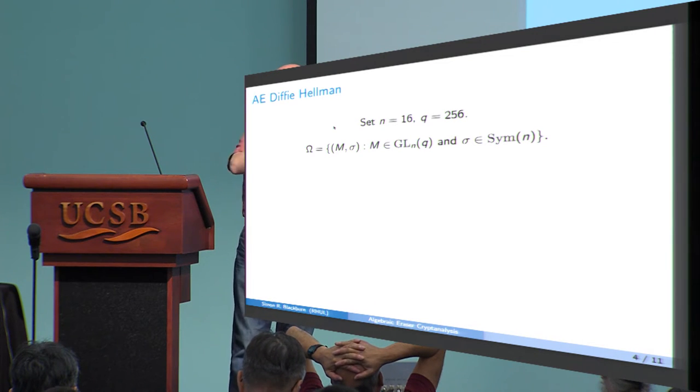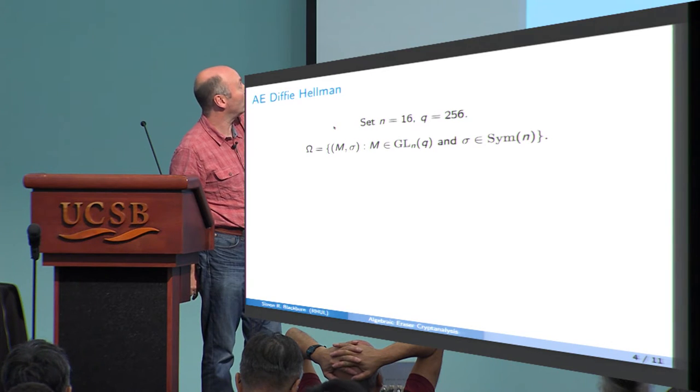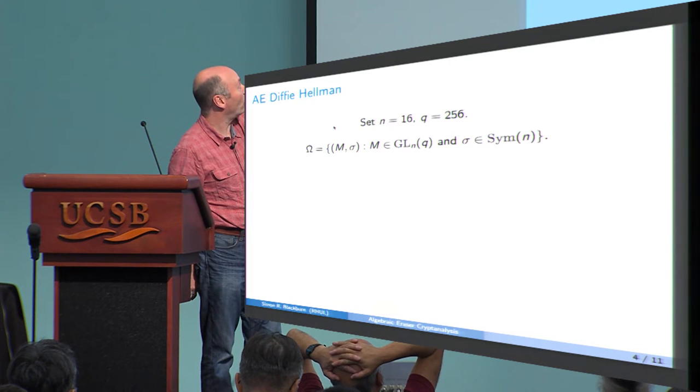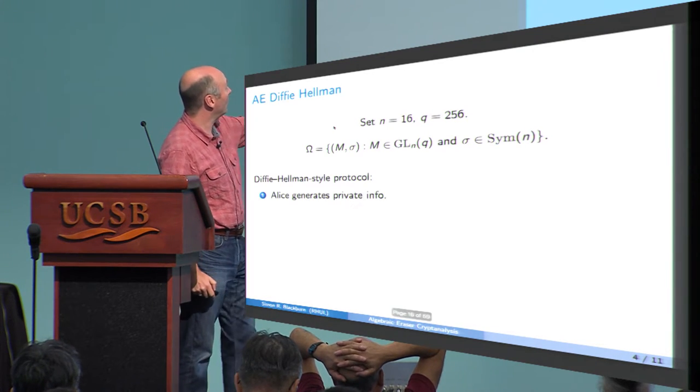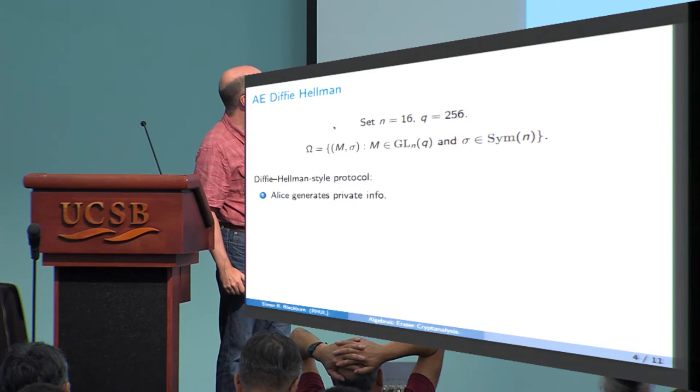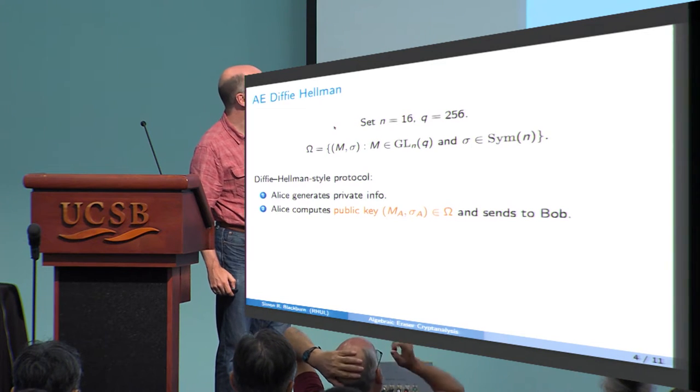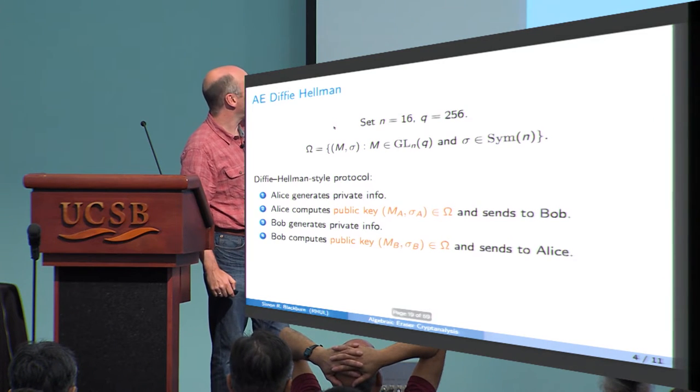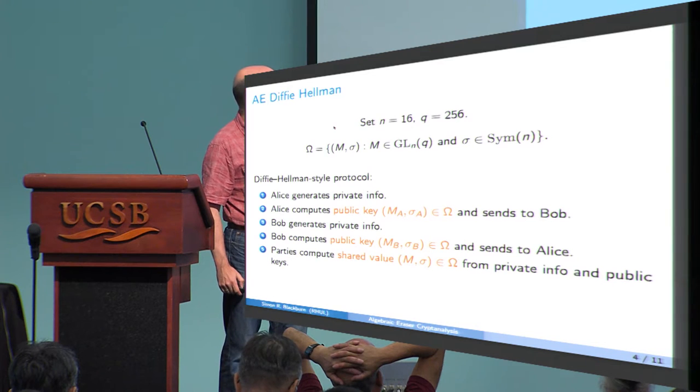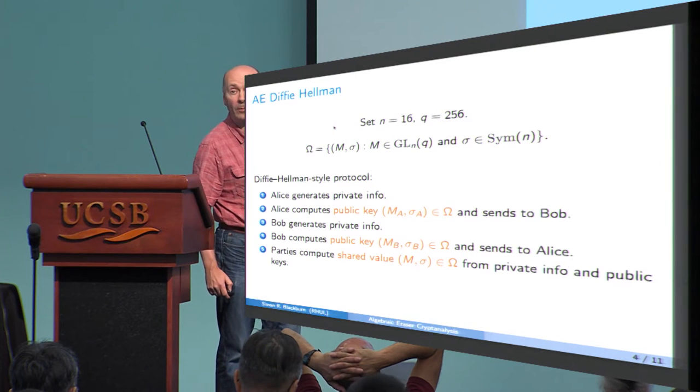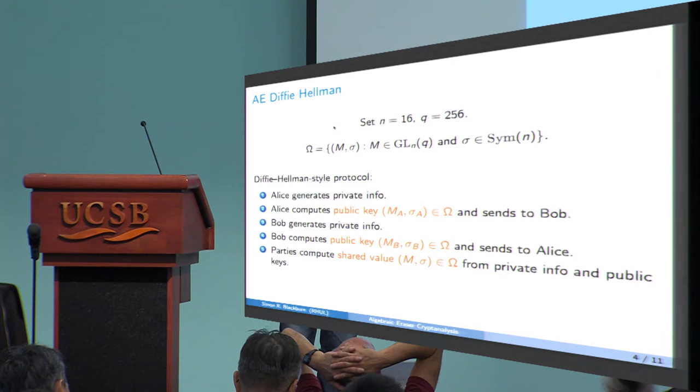And now, in Diffie-Hellman, the things that are passed between the two parties are integers modulo P, classically. So here, they're not integers. They're actually pairs. The first thing is a matrix M, which is an N by N matrix with entries in GF(Q). And the second thing is a permutation. This is just a permutation of N objects. In this case, 16 objects. So what happens is a Diffie-Hellman-style protocol. What happens is Alice generates some private information, which I'll come to in a second. Alice then computes the public key, which is a matrix M_A and a permutation sigma_A from Omega, sends that to Bob. Bob does a similar thing. He generates private information in some way, uses this to compute a public key, sends this to Alice. And then what both parties do is compute a shared value, matrix M and permutation sigma, by using the information provided by the other party and the information they've generated privately. So it's very similar to Diffie-Hellman at this level, apart from the things you're transmitting from one side to the other.